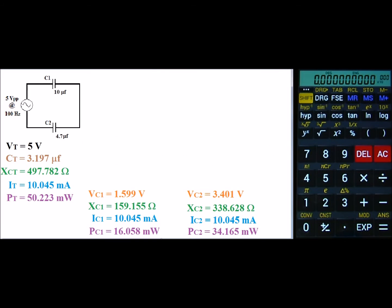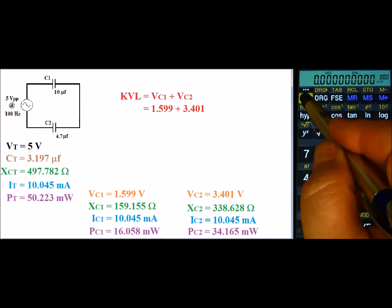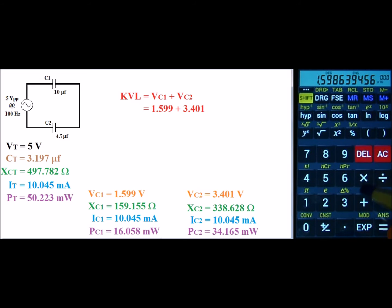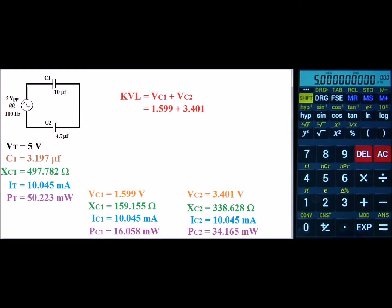Now that we have all the totals and individual values, let's check our circuit using Kirchhoff's voltage law. His voltage law states that the voltage across C1 plus the voltage across C2 must equal the source voltage — so we have 1.599 plus 3.401. Recalling our voltages, as you can see we do have our source voltage, so this circuit is worked out correctly. Thank you for watching.